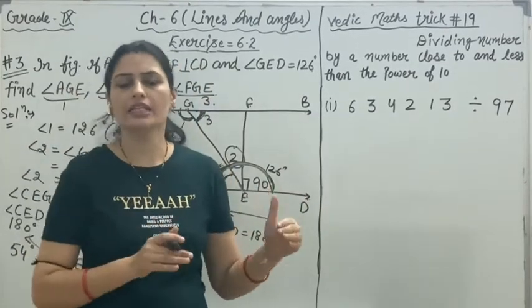Now, it is time for Vedic Math trick number 19. In this trick, we will discuss dividing a number by a number close to and less than the power of 10. In the previous lecture, we have already discussed, but the dividend was a three-digit number. Here, we have 634,213.